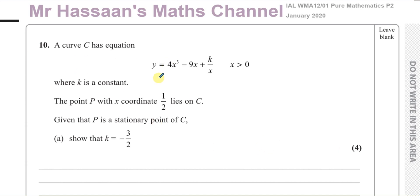So going straight ahead with this question — it's about a curve C given by the equation y equals 4x cubed minus 9x plus k over x, where x is greater than 0, and k is a constant. The point P, which has x-coordinate of one half, lies on the curve C. Given that P is a stationary point of C, show that k equals minus 3 over 2.